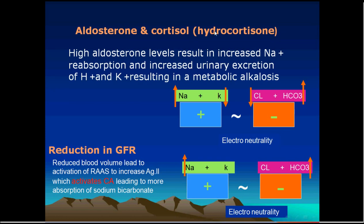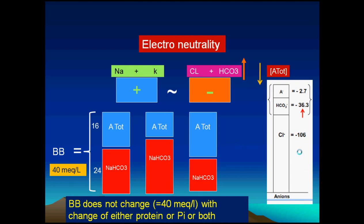A patient treated with corticosterone or under high aldosterone will have excretion of potassium and retention of sodium. So loss of potassium will be associated with increase in sodium to keep electroneutrality, and accordingly sodium will be absorbed with bicarbonate. So a patient with corticosterone or aldosterone treatment will have metabolic alkalosis. Similarly, in hypovolemia or dehydration, the renin system is stimulated, aldosterone increases, stimulating carbonic anhydrase, increasing sodium bicarbonate absorption. Loss of potassium leads to retention of sodium with bicarbonate.